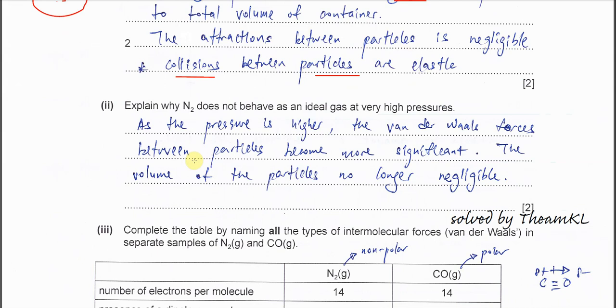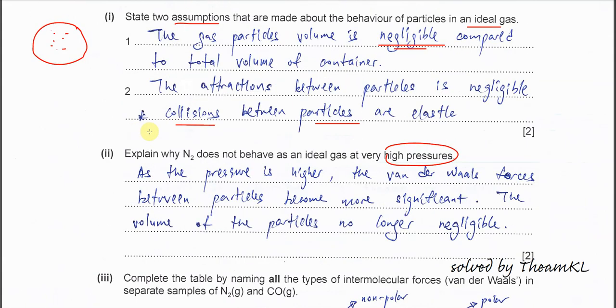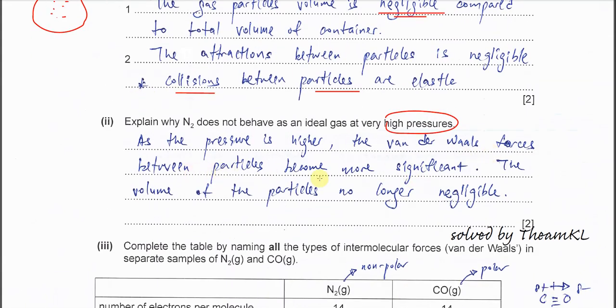Part ii. Explain why N2 does not behave as ideal gas at very high pressure. When pressure is high, volume is small, will be lower.